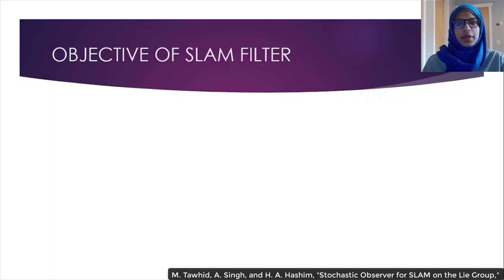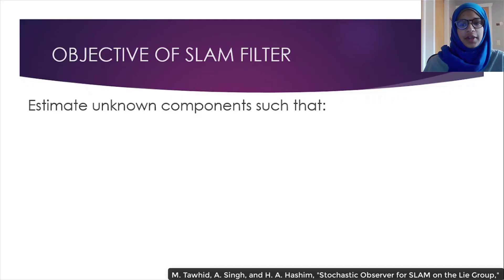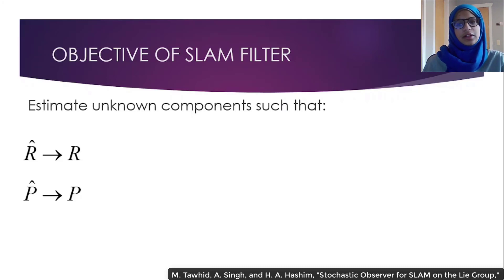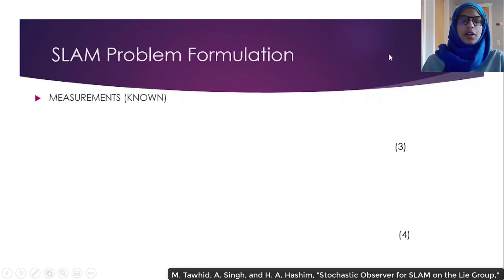Going back to the original question: what is the objective of this SLAM filter? From earlier, we know that there are unknown variables. The knowns are known and accounted for, but the unknowns become the puzzle. Our goal is to then estimate the unknowns — which from earlier are the orientation, the position, and the feature position — to the closest degree possible. In other words, estimate the unknowns so that r hat is very close to r, p hat is very close to p, and pi hat is also very close to pi.